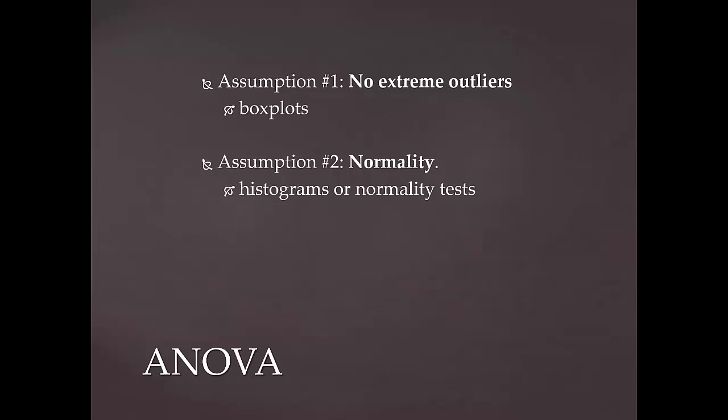Fortunately, the two-way ANOVA is fairly robust to violations of normality. That is, the assumption can be mildly to moderately violated and still provide valid results. In fact, some statistical texts will state that the two-way ANOVA only requires approximately normal data, and while others will even say that skewed data is fine as long as the number of cases in each group is similar.